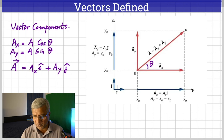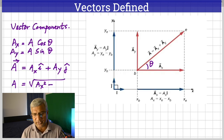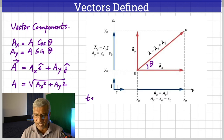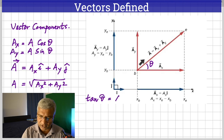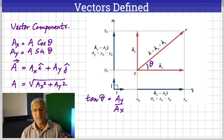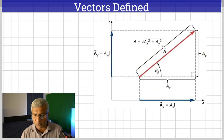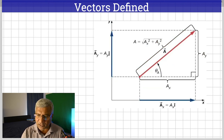We are going to be talking about unit vector representation more as we go on. The magnitude of the vector is the square root of AX squared plus AY squared. The angle theta: tan is opposite over adjacent, so tan theta equals AY over AX. Those are the relations between the components and the angle. AX is AX·i — I is the unit vector along the X axis — and AY is AY·j, the unit vector along the Y axis.